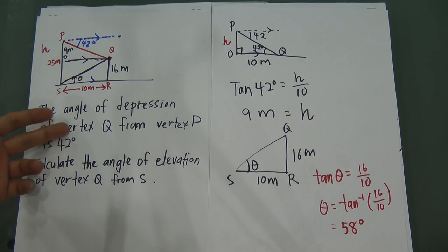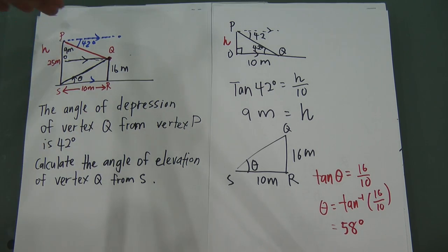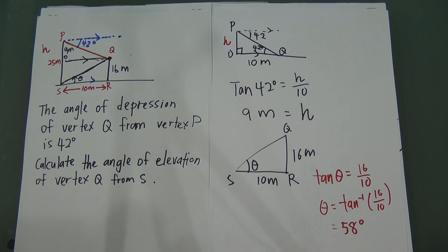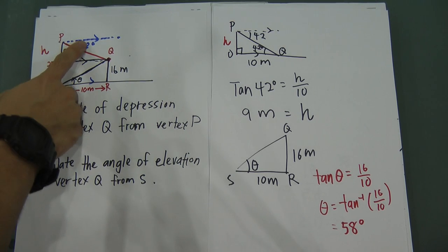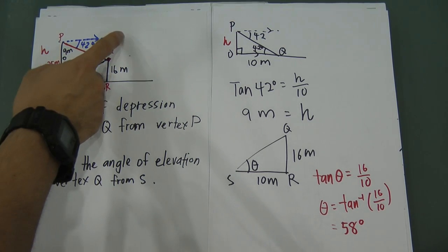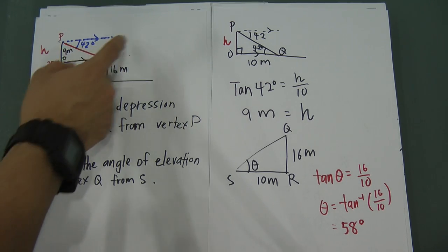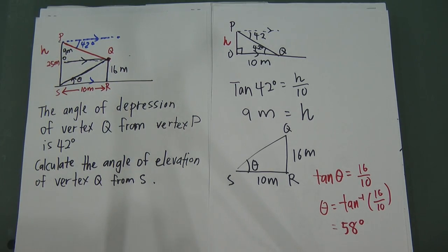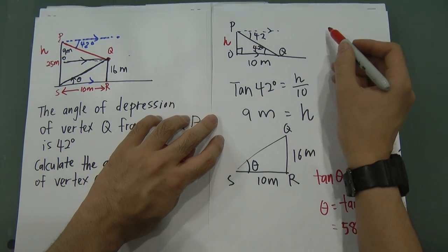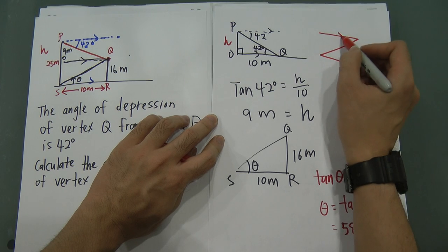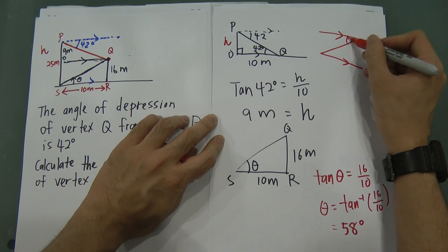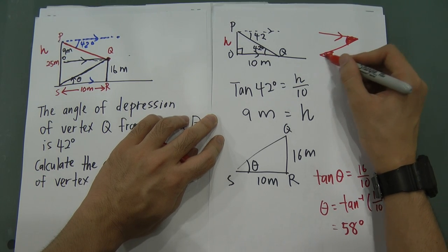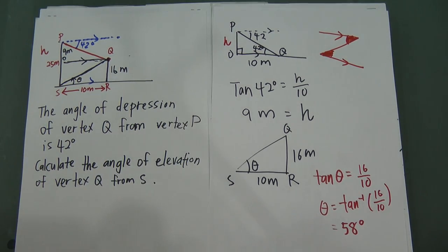So that is how to find the angle of elevation. Elevation means look up, depression means look down — both must have the horizontal line. If there is no horizontal line, you can add one yourself. Since the lines are parallel, you can use the Z-angle (zigzag) effect: the angle after the Z will be the same as the original angle. This is something you learn in Form 2. Let's have a look at one more question.